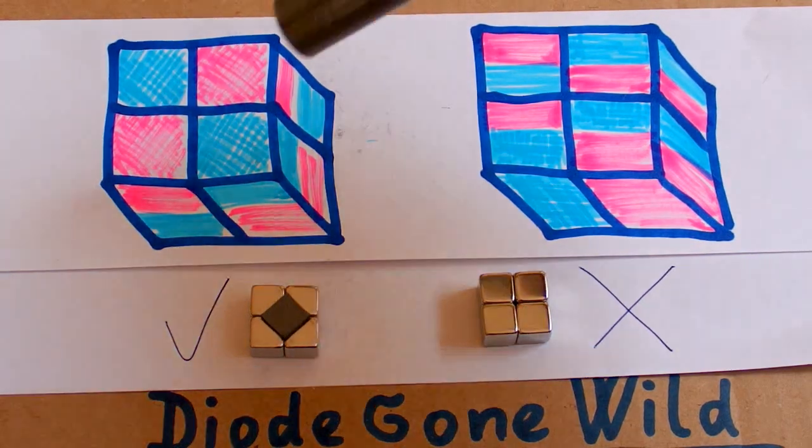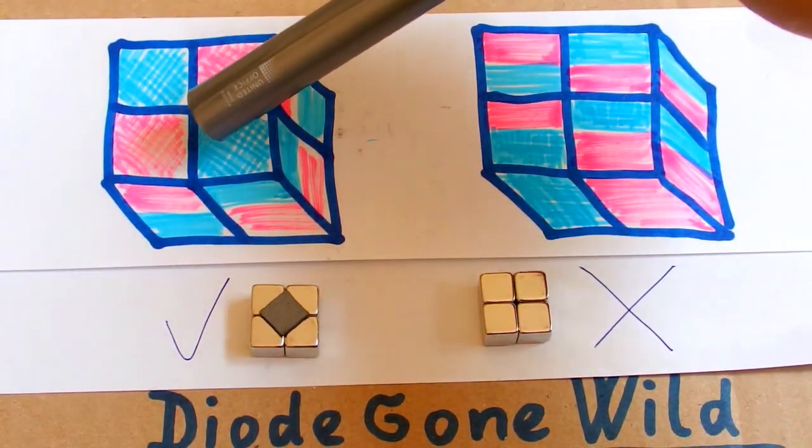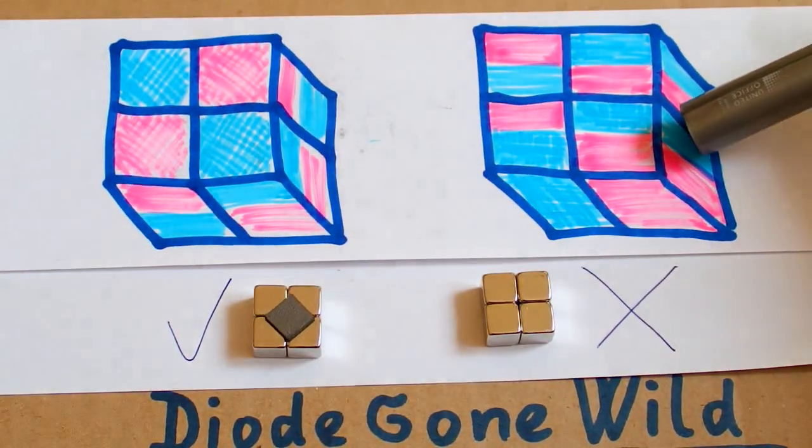The magnets have to be in a chessboard configuration. So this one works, but this one doesn't.